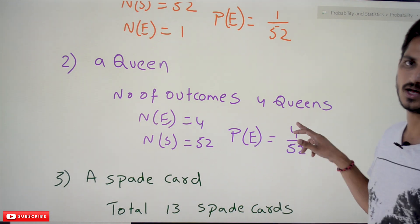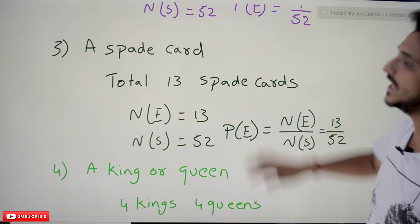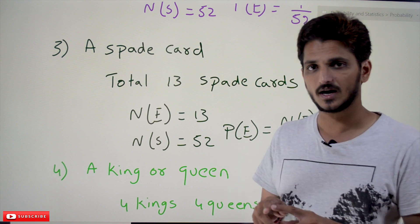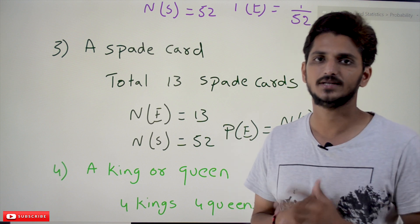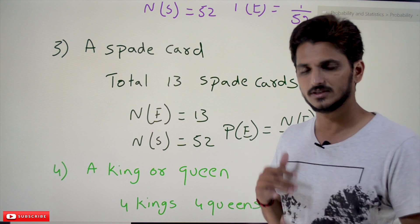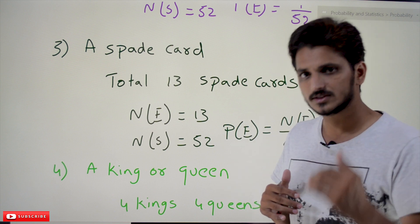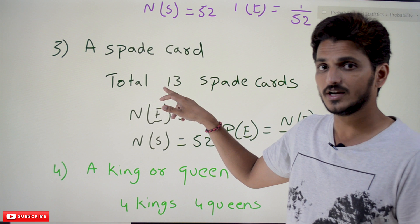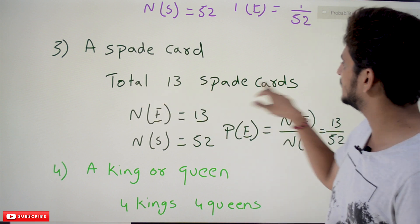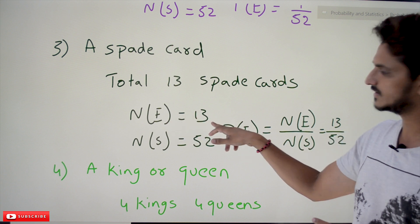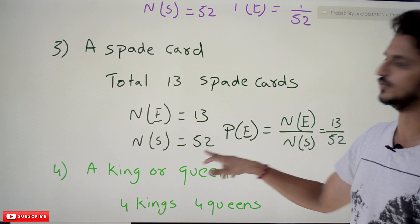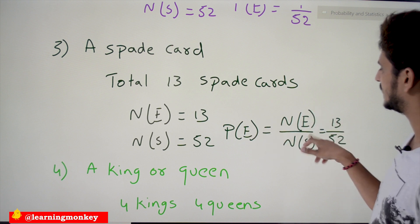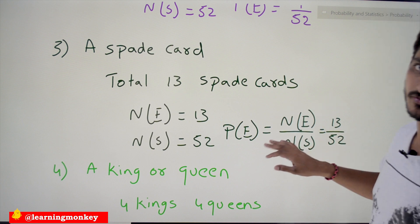Next: what is the probability of drawing a spade card? Spade is a symbol. How many cards are present in the spade suit? 13 cards are available — just as diamonds has 13, hearts has 13, and clubs has 13. So the number of elements in our event is 13 and in our sample space is 52, giving a probability of 13/52.